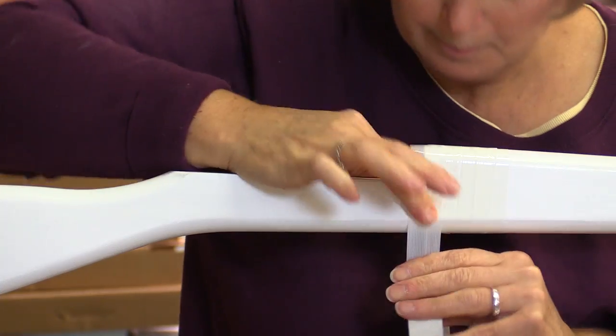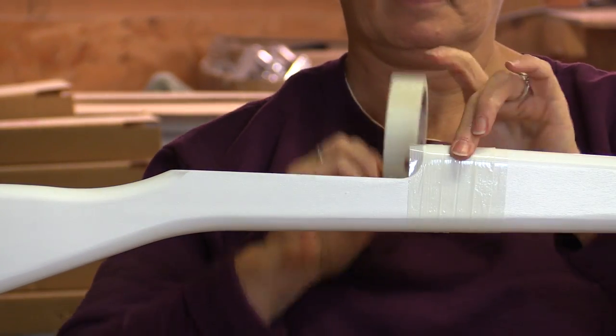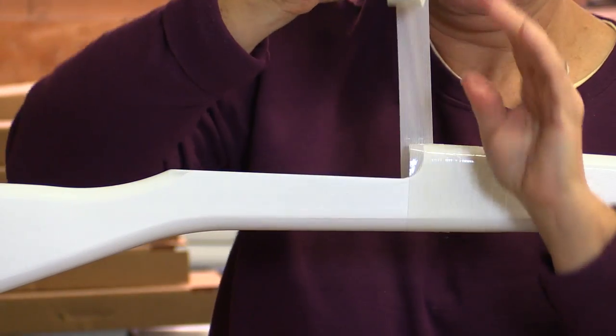As you approach the center of the rifle where the rifle bolt is cut out, you'll want to use your finger to tape up and over the empty space.